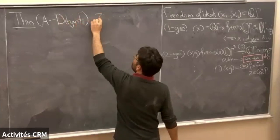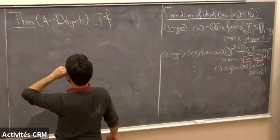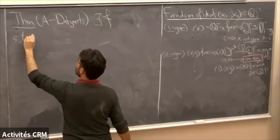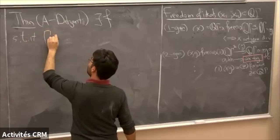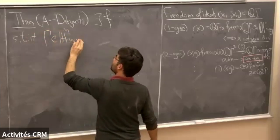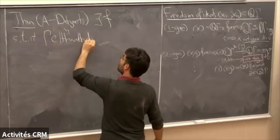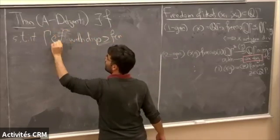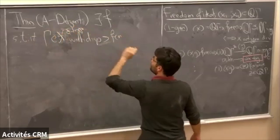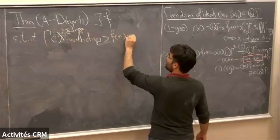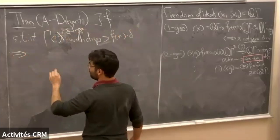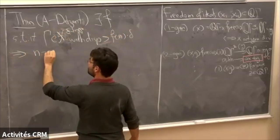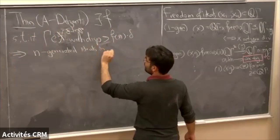The theorem is: there exists a function f such that if the group acts on delta-hyperbolic space with displacement greater than f(n)·delta, then every n-generated ideal in Z[gamma] is free.